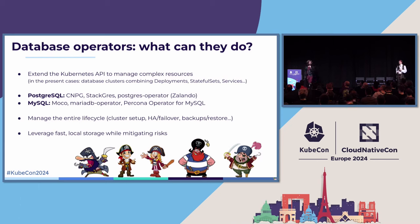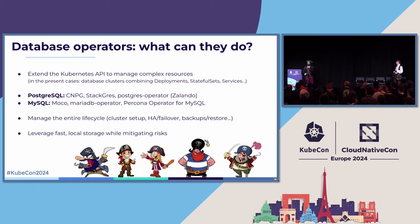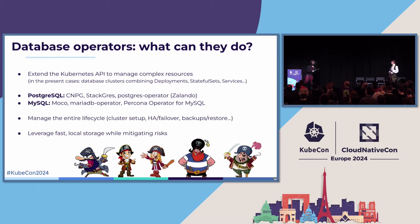A database operator is something that lets us deploy a database automatically on Kubernetes and manage the whole lifecycle. Behind these fancy words, it's going to take care of deploying not just the database server, but like a primary, a replica, have backups. And when you have backups, backups are pointless if you don't have restores. So also manage restoring — for instance, point-in-time restore, which is something really cool.